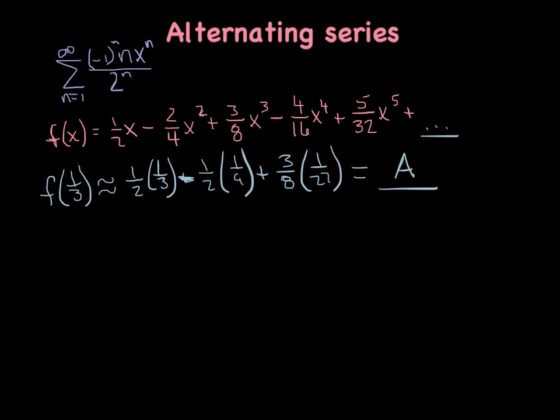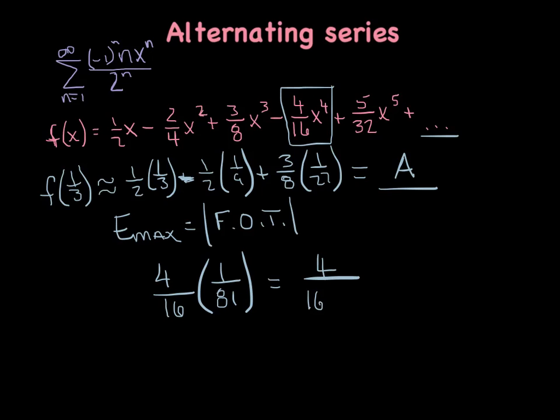Now the question is, how close is my alpha A to the real answer, f of one-third? And so we're going to say the maximum error for an alternating series is the absolute value of that first omitted term. So I'm going to grab the first omitted term, which was this rascal right here. I'm disregarding the negative sign, and I'm going to plug a one-third into that term, and that's going to give me one over eighty-one. That represents my maximum error. When you add the first three terms together, the sum is off by no more than that next term.